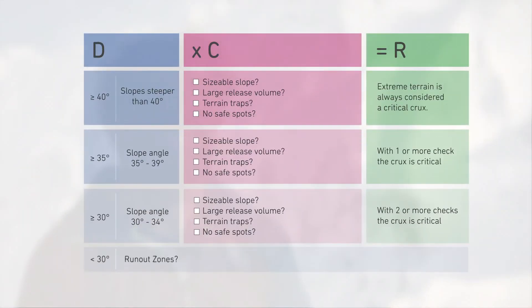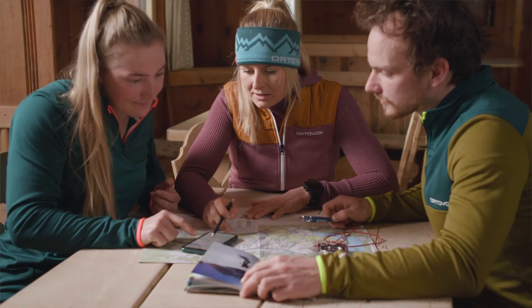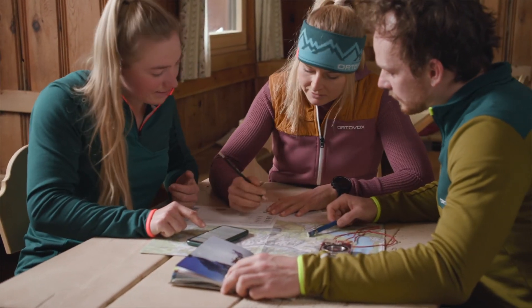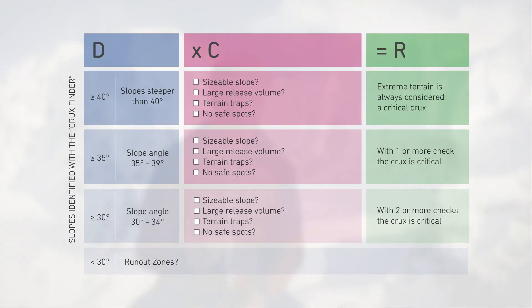When assessing the avalanche risk, the 'Is the Tour OK' tool can be helpful. First we look at the danger — the probability of avalanche release. Because this is extremely difficult to estimate directly, we use slope steepness as a proxy, since steepness correlates with initiation and propagation. The slope steepness is organized into three danger classes: 30 to 35 degrees, 35 to 40 degrees, and above 40 degrees. The steeper the slope, the more dangerous it is.